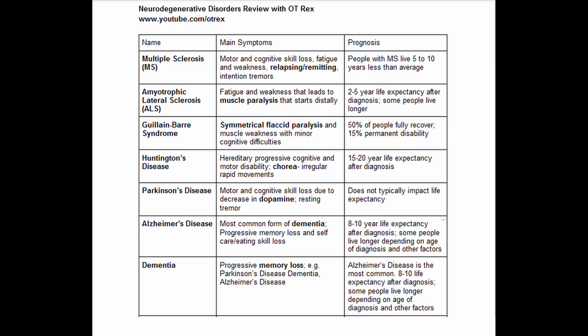Parkinson's disease has motor and cognitive skill loss, and this is due to the decrease in dopamine production — I always remember dopamine with Parkinson's disease. You also see a resting tremor. Life expectancy is typically not impacted for Parkinson's disease.